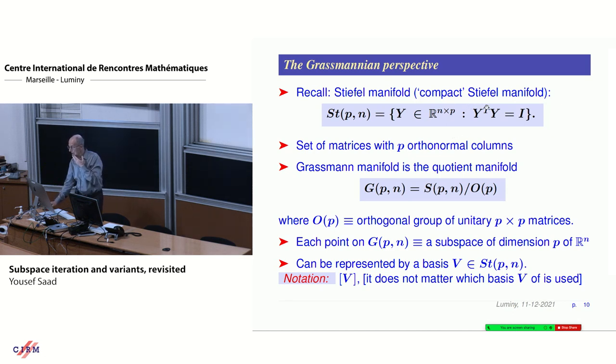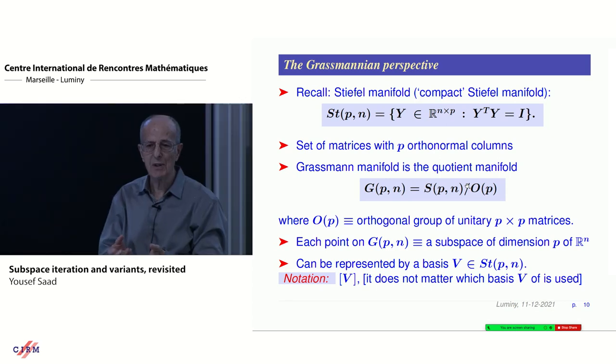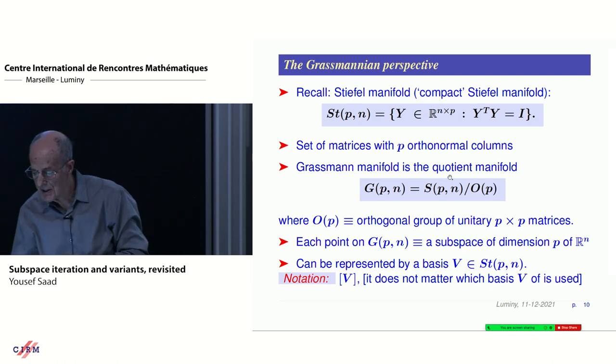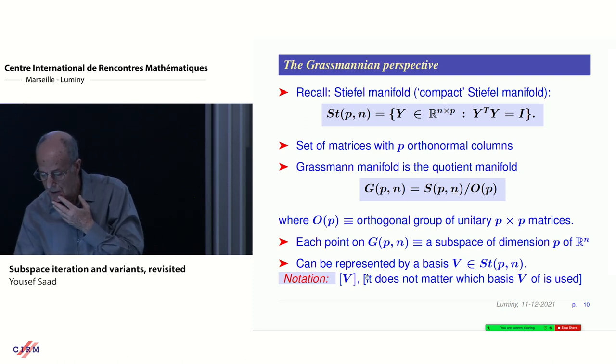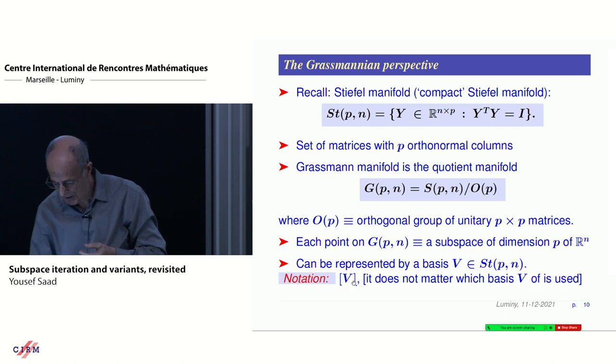Now I'm going to try to see how you could do this on Grassmann manifolds. Grassmann manifolds are simply manifolds that represent subspaces. The Stiefel manifold is the set of matrices that are n by p that have orthonormal columns. The Grassmann manifold is a quotient manifold of sp divided by the set of unitary matrices, the orthogonal group. Each of these represents a subspace of dimension p in Rn.